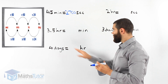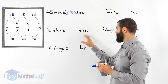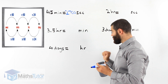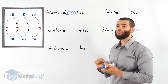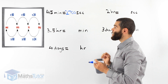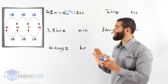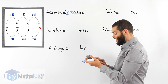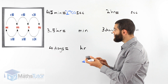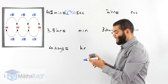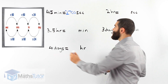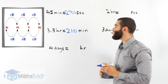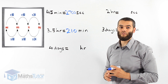Next example: three and a half hours — we want to know how many minutes that is. We're going from hours to minutes. The process says we have to multiply by 60. So three and a half times 60. Our answer is 210 minutes. There are 210 minutes in three and a half hours.